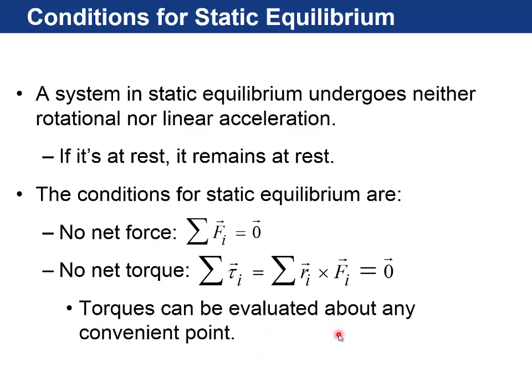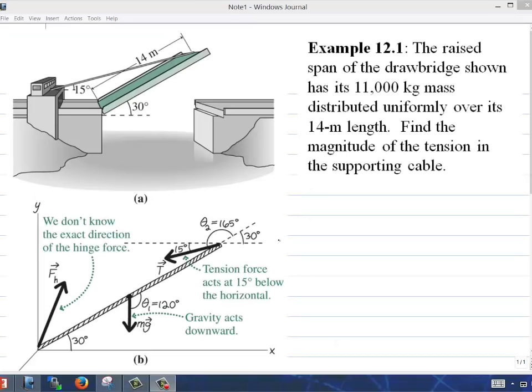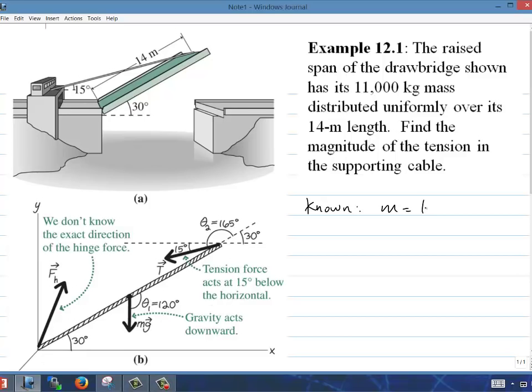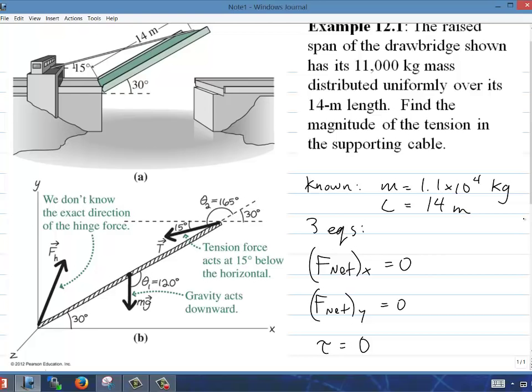We have a raised span of a drawbridge shown that has its 11,000 kilogram mass distributed uniformly over its 14 meter length. Find the magnitude of the tension in the supporting cable. The other thing we know is the length is 14 meters. So we know that our three equations are going to be the net force in the x direction is zero, the net force in the y direction is zero, and the net torque is zero.